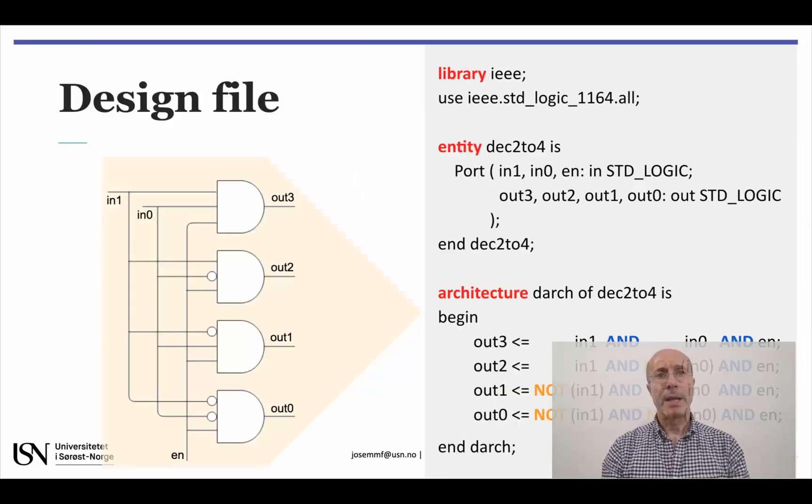The logic diagram on the left complies with the functional table of the 2-to-4 decoder. The enable input is common to all four AND gates, so if it is zero, all the outputs will be zero as well. You can also see that each gate implements a different product term, so only one output will be active at each time when enable is one.